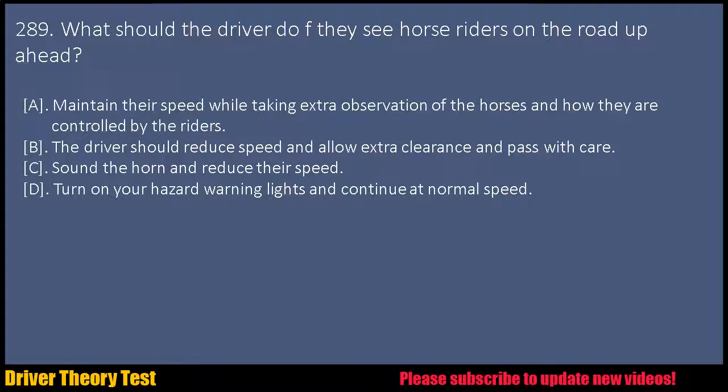Question 289: What should the driver do if they see horse riders on the road up ahead? a. Maintain their speed while taking extra observation of the horses and how they are controlled by the riders. b. The driver should reduce speed and allow extra clearance and pass with care. c. Sound the horn and reduce their speed. d. Turn on your hazard warning lights and continue at normal speed.